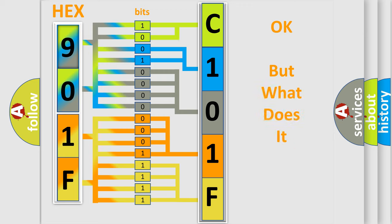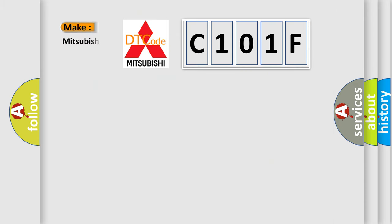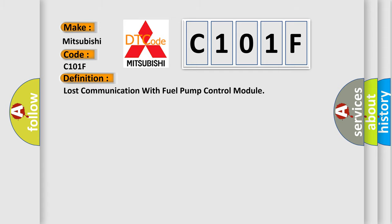The number itself does not make sense to us if we cannot assign information about what it actually expresses. So, what does the Diagnostic Trouble Code C101F interpret specifically for Mitsubishi car manufacturers? The basic definition is: Lost communication with fuel pump control module.